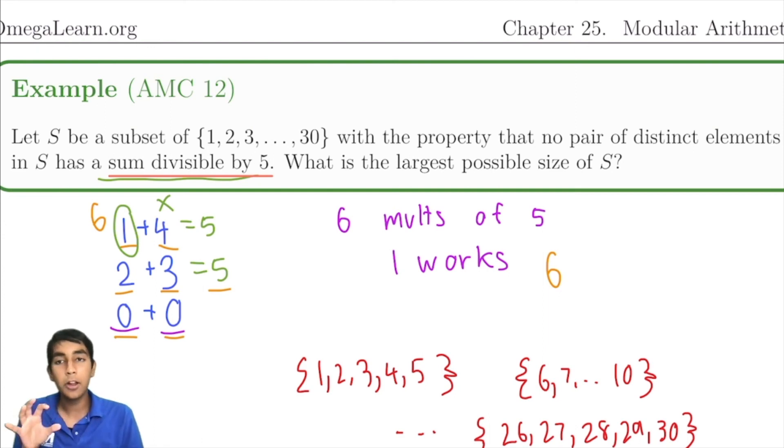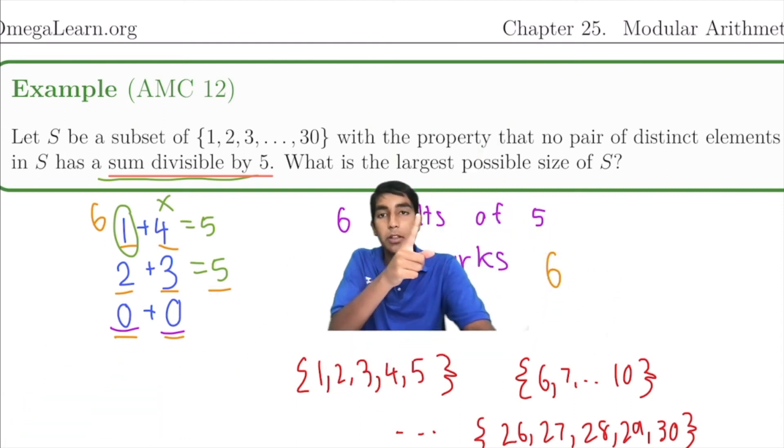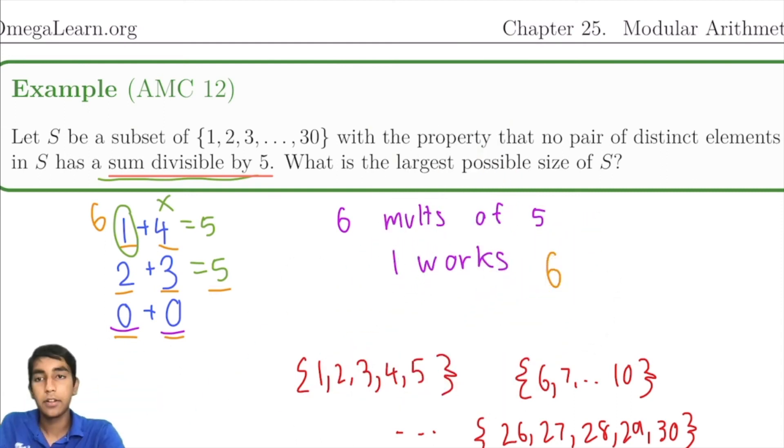Why do we take all 6 of them and not just maybe 2 or 3 of them? Because you're trying to find the largest possible size for S. So 6. What about the second condition? It's essentially the same thing. We can either have 6 mod 2 or 6 mod 3, so another 6.